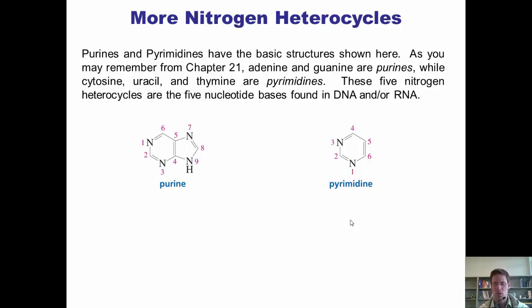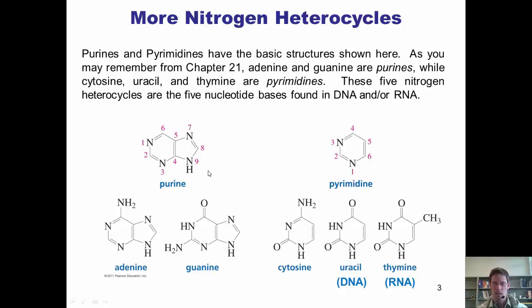As I mentioned back in chapter 21, one of the most important family groups of nitrogen heterocycles is that of the purines and pyrimidines. Purines and pyrimidines have the basic structure shown here on this slide. As you may have learned in biology courses, adenine and guanine are the two nucleotide purines, while cytosine, uracil, and thymine are the pyrimidines.